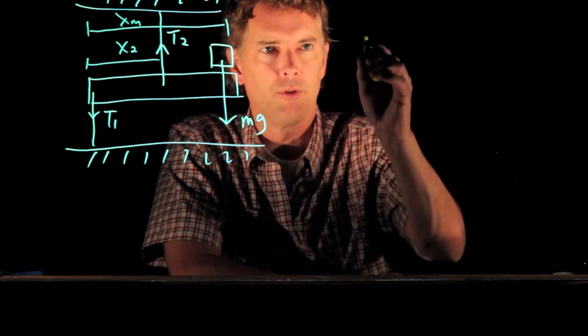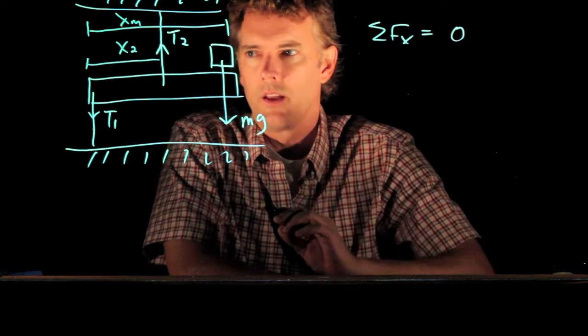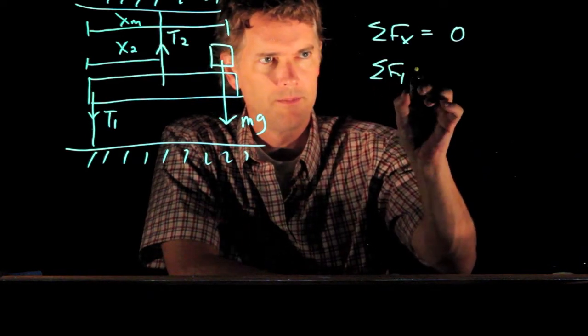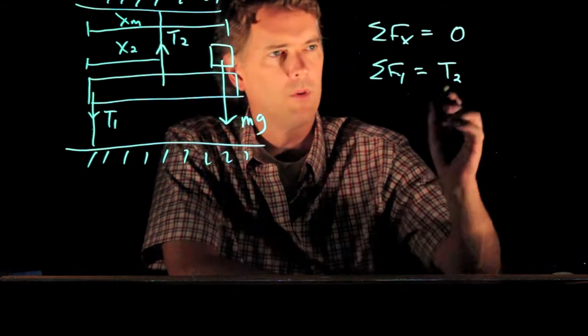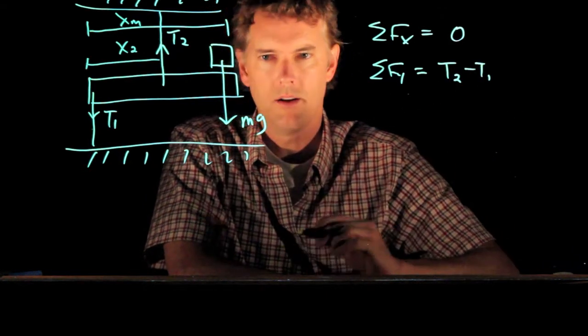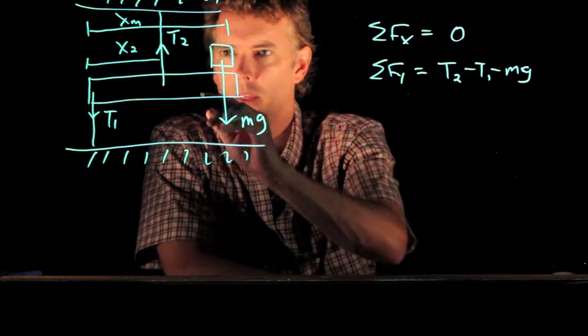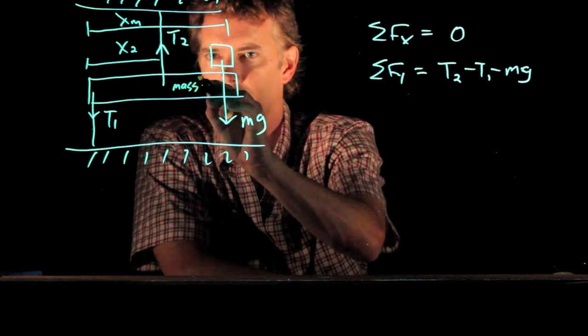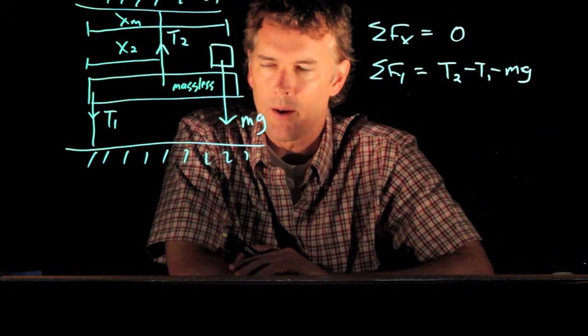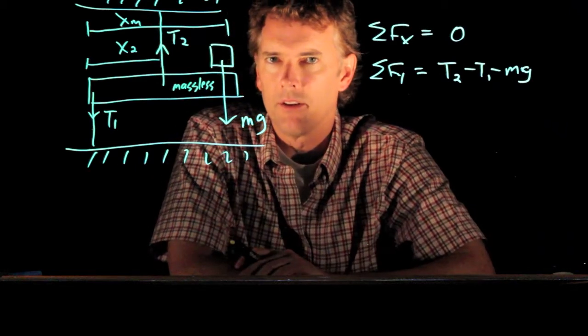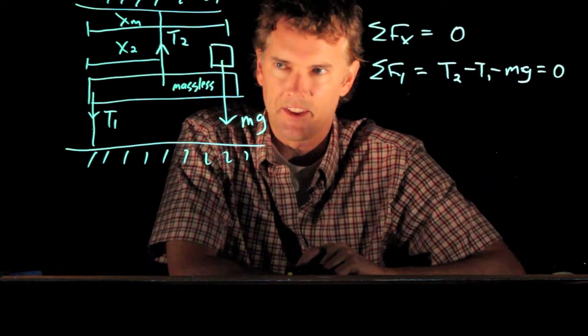And now let's analyze the forces. Okay, there's no forces in the x direction. There are forces in the y direction. We have T2 going up. We have T1 going down. And we have mg going down. Now, we're assuming that this beam is massless. If you have a mass on your beam, you have to add that. And that would be acting at the center of mass of the beam. So forces have to add up to zero if it's in static equilibrium.